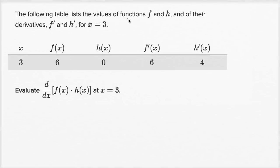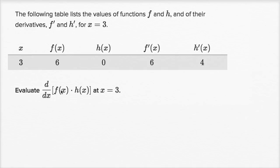The following table lists the values of functions f and h and of their derivatives, f prime and h prime, for x equal to three. So it's telling us when x is equal to three, the value of f is six — f of three is six — h of three is zero, f prime of three is six, and h prime of three is four. Now they want us to evaluate the derivative with respect to x of the product of f of x and h of x when x is equal to three.